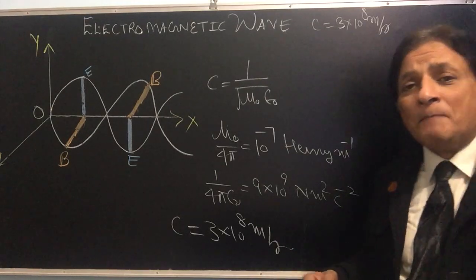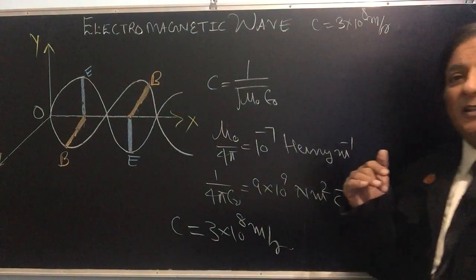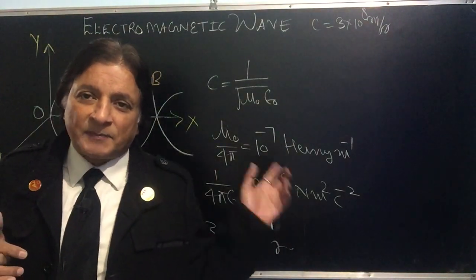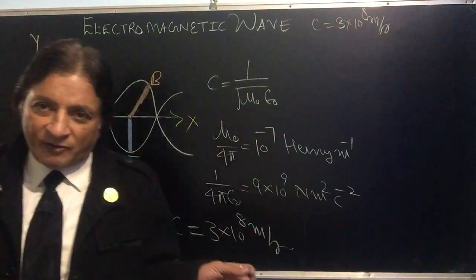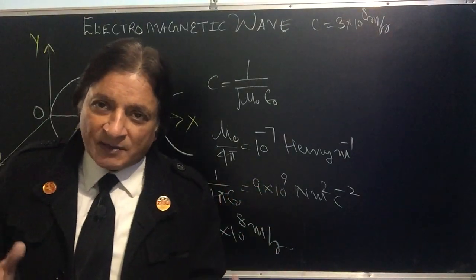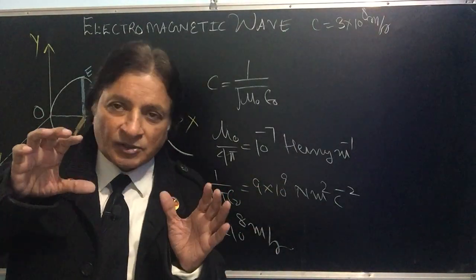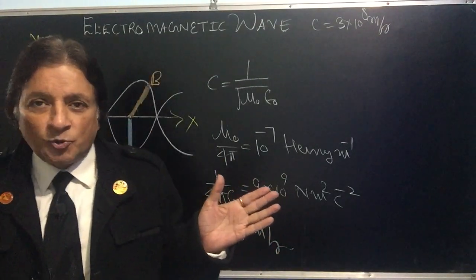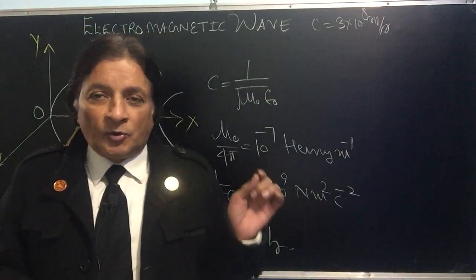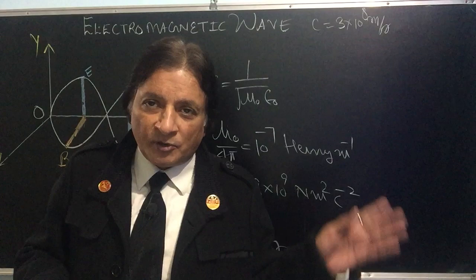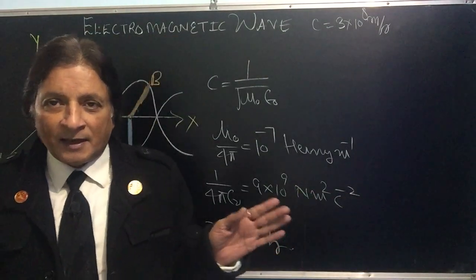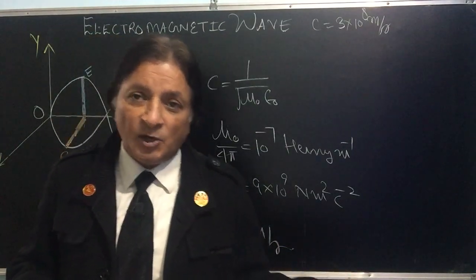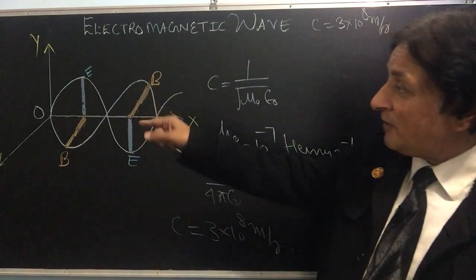μ₀ is the magnetic permeability of free space — the ability to allow the magnetic field lines to influence. ε₀ is the electric permittivity of free space — the ability to restrict two charges in space. If you get a question in the Class 12 board exam — 'show that the speed of light is 3 × 10⁸ m/s' — for 3 marks, you need to show this graph.